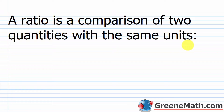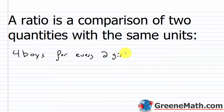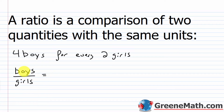As an example, let's say you're at a school dance and the chaperone tells you there are four boys for every two girls. We can describe this relationship by writing a ratio, and there are three main ways to do this. If we want the ratio of boys to girls, we write it as a fraction with boys in the numerator and girls in the denominator — so four over two, read as 'four to two.'